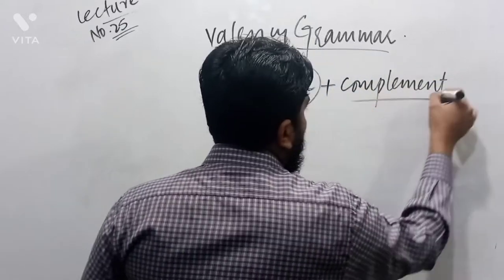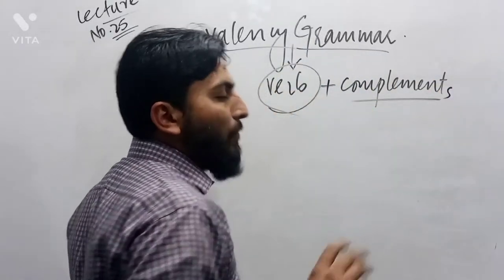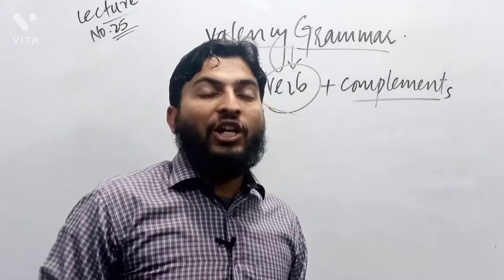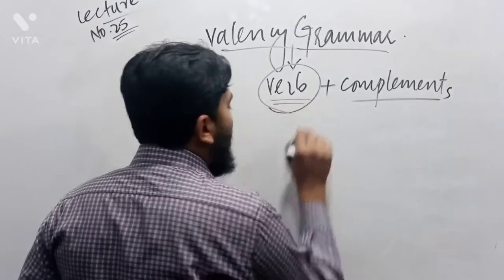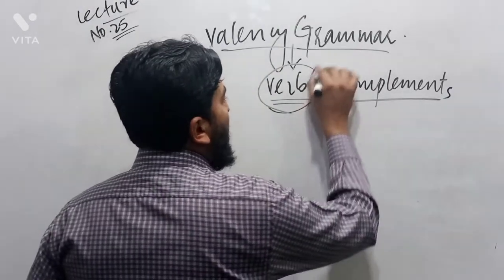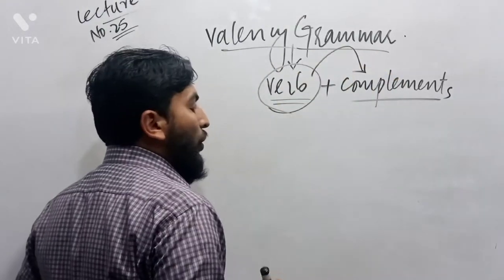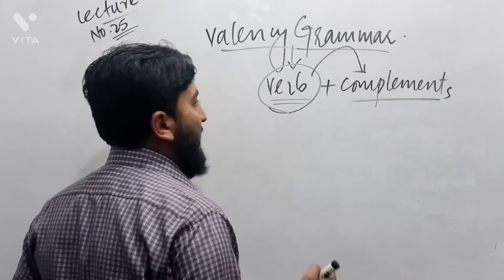This shows that the use of complement is monovalent, is polyvalent, is trivalent. This shows that the use of a verb, how this verb is followed by a complement. One complement, two, three, something like that.